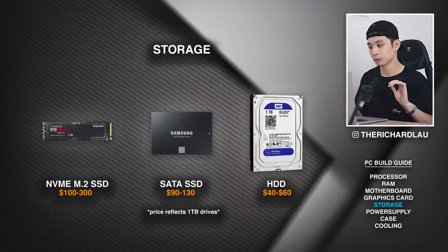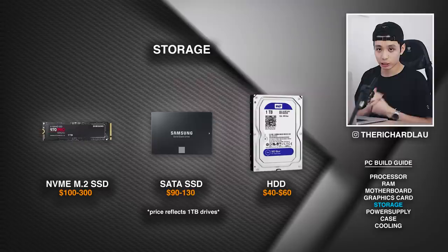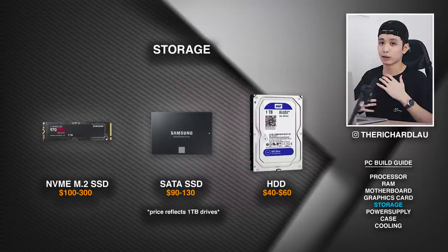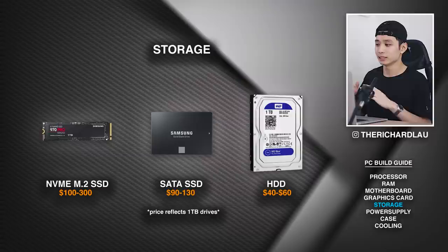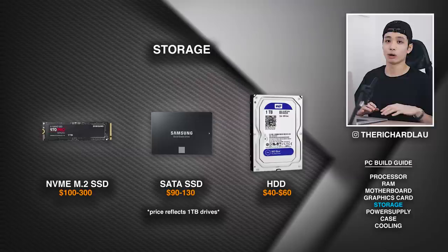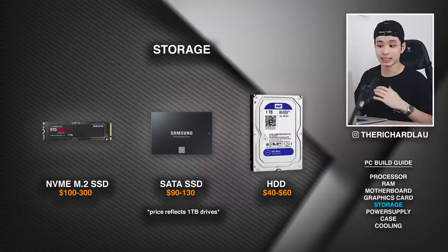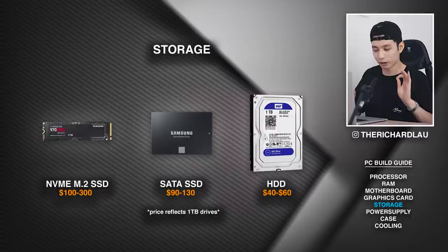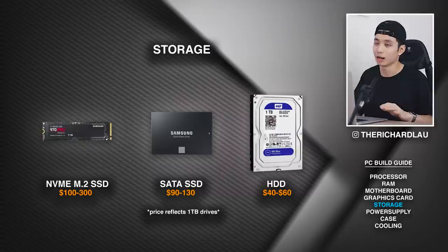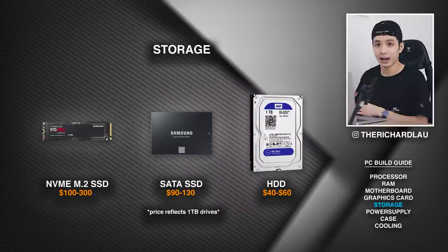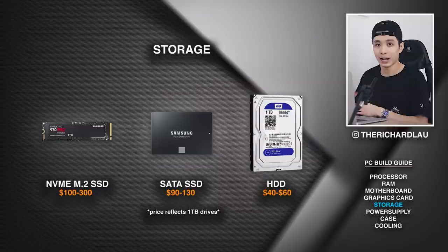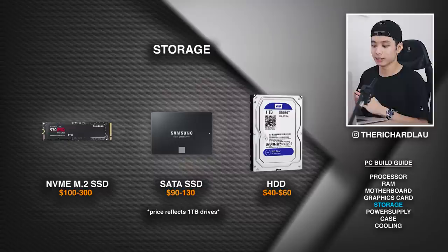Moving on to storage — there are three options: NVMe M.2 SSD, SATA SSDs, and hard drives, in order from fastest to slowest and most expensive to cheapest. If you have the budget, I highly recommend getting an NVMe SSD as your OS main drive — this will make everything run so much faster: startup time, loading time, everything. When you're editing, I highly suggest using a separate drive as a scratch disk instead of editing off the main OS drive, as it slows performance and puts wear and tear on the drive. For the scratch disk, I recommend a second NVMe drive, or a SATA option if not. I don't recommend a traditional hard drive as your main drive, but a hard drive is great as a storage option for backups and archives. The ideal setup: NVMe for the OS, SATA for the scratch disk, and HDD for storage.